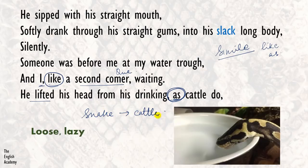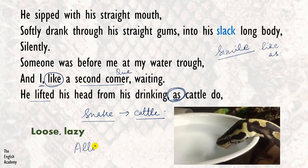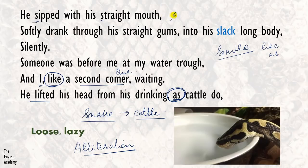The snake was before the poet at the water trough, and the poet waited like a second comer in a queue. The snake lifted his head from drinking as cattle do — just like cattle raises its head while drinking, the snake took a break and lifted its head. Literary devices: simile used twice — 'I like a second comer' (poet compared to a person second in a queue) and 'he lifted his head from his drinking as cattle do' (snake compared to cattle); alliteration — 'sipped straight,' 'softly straight gums slack silently' (s-sound prominent), and 'he lifted his head' (h-sound).